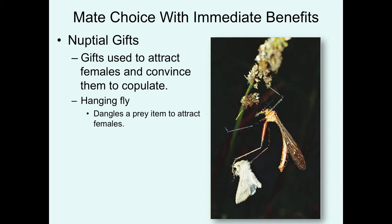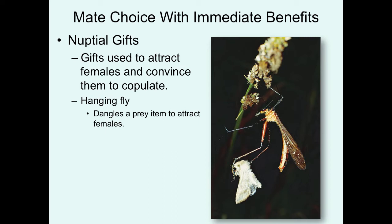Let's first talk about how females can choose mates based upon what immediate material benefits they could get from choosing one male over the other. Males of some species use what are called nuptial gifts — food gifts produced to try to convince the female to copulate with a specific male. That's being demonstrated here with the hanging fly. Males hang from vegetation holding an insect prey item that they're using to attract females.